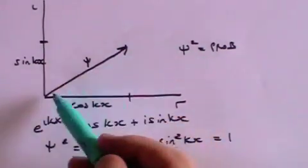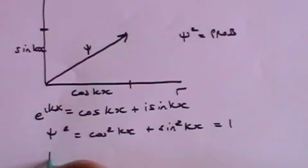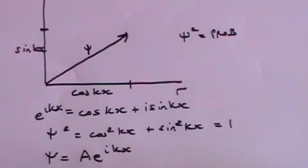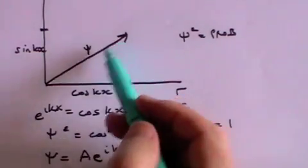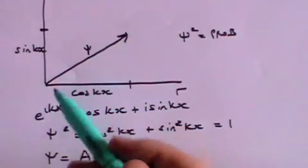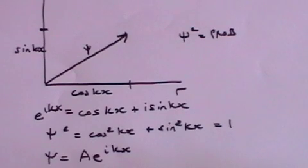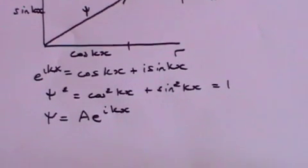If we want the wave to have a different amplitude, we would need to use the term psi equals a times e to the ikx. Then the absolute length of the psi vector would be a and the probability would be a squared. This satisfies the condition that the probability is a constant and that we have no idea where the electron is if we know its momentum precisely.